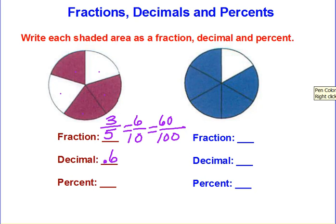Then you would move your decimal two places to the right, and that would be 60%, which makes sense because more than half is shaded, and 60% would be more than half.